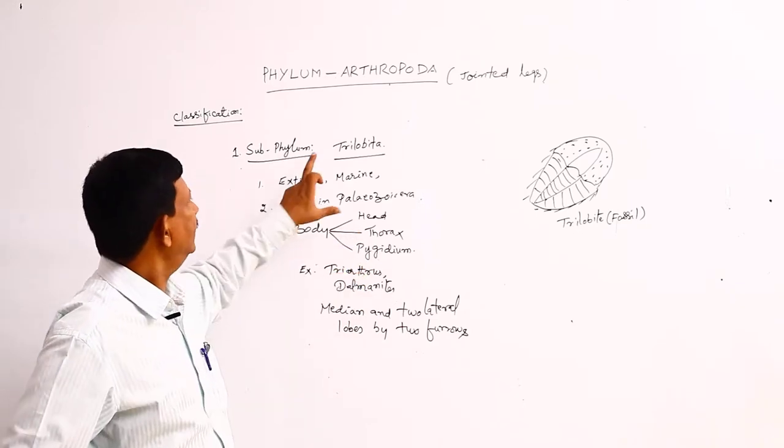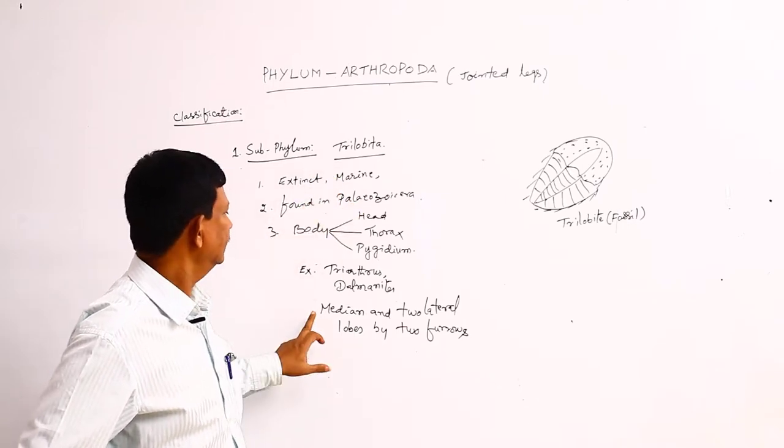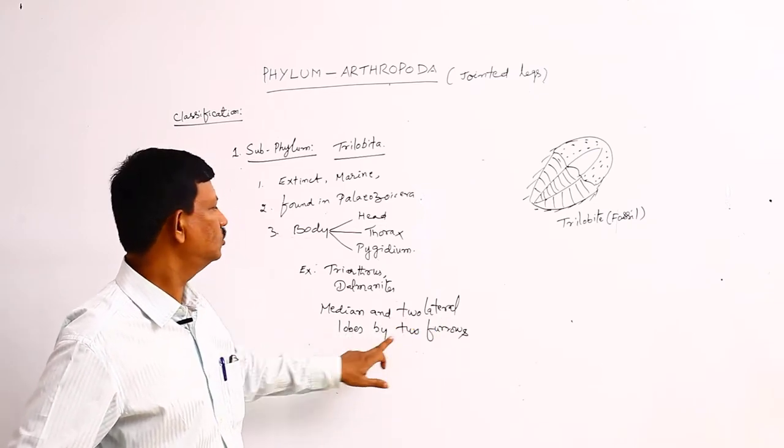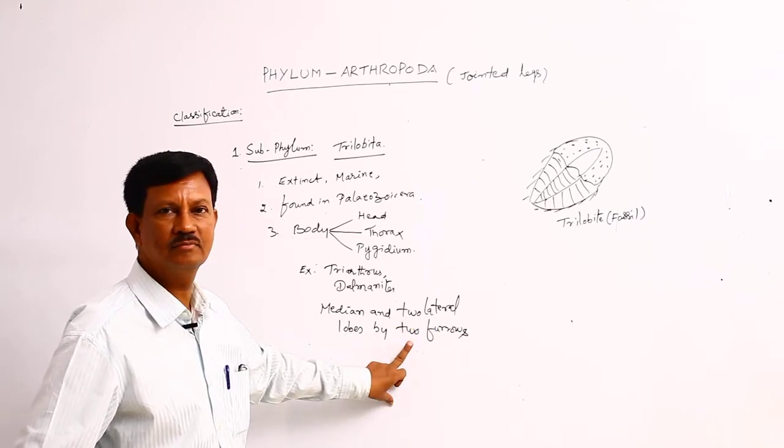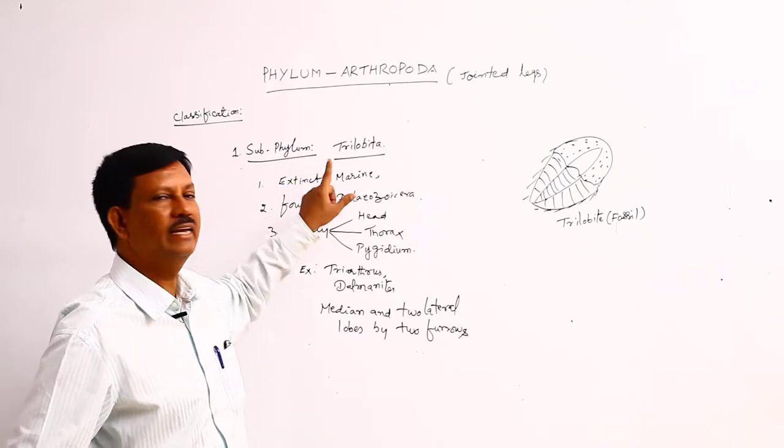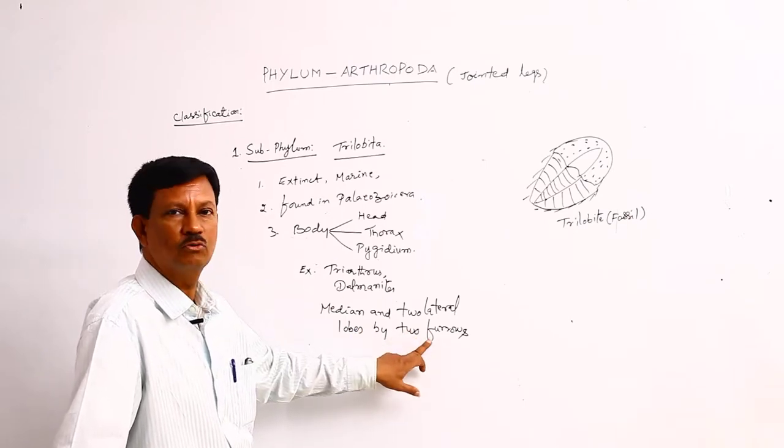Why is the subphylum name Trilobita derived? In the body, a median and two lateral lobes separated by two furrows are present. That is why the subphylum name is derived as Trilobita, due to the presence of two furrows.